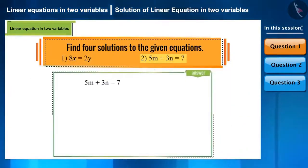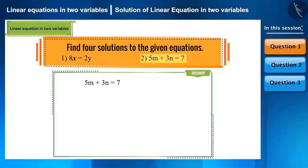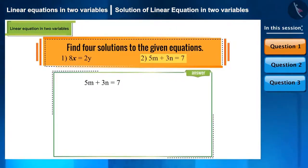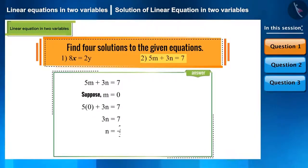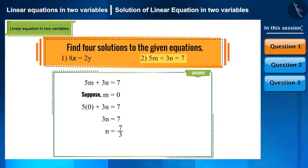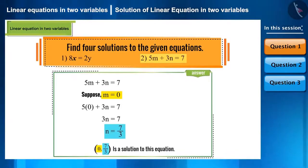Now, let's take the second equation and find its solution as well. 5m plus 3n is equal to 7. Substituting the value of m as 0 in this equation, we get the value of n as 7 by 3. Hence, (0, 7/3) is the first solution to this equation.